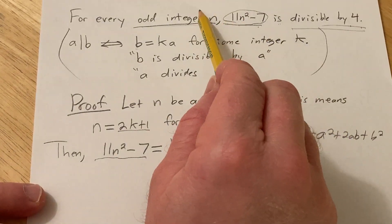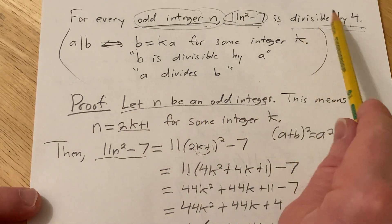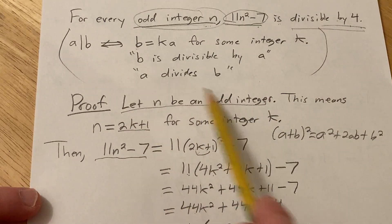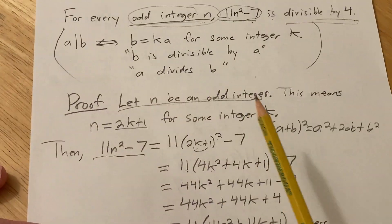You start by assuming that n is an odd integer, right? And then we showed that it's divisible by 4. And this is true for all odd integers, right? Because we just let n be some random arbitrary odd integer.